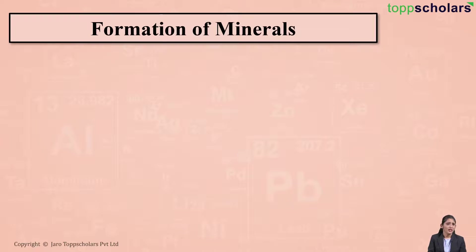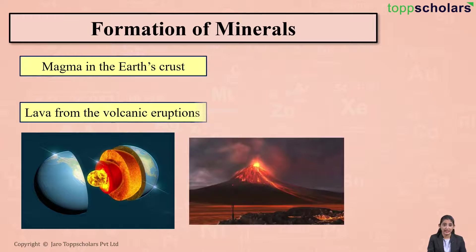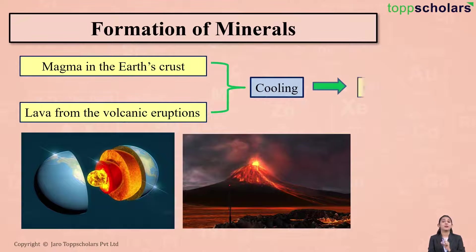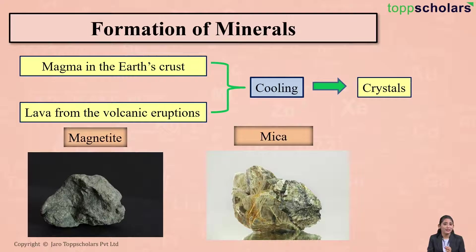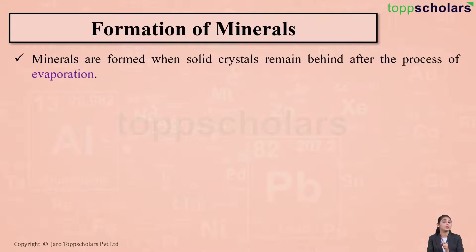Minerals are formed when magma in the earth's crust and lava released during volcanic eruptions cool down. On cooling, it results in the formation of crystals, and these crystals are nothing but minerals. For example, magnetite and mica are minerals formed by the cooling of magma and lava.